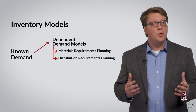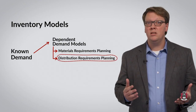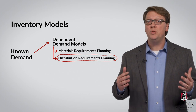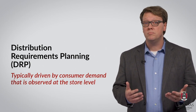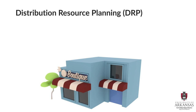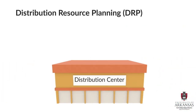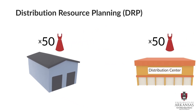While Materials Requirements Planning focuses on procurement and manufacturing processes, Distribution Requirements Planning, or DRP, focuses on inventory decisions throughout a distribution network. These decisions are typically driven by consumer demand that is observed at the store level. To understand how DRP works, let's look at a clothing store as an example. If we expect to sell 50 dresses in Store X in four weeks from now, we will need to make sure that the Distribution Center, DC1, will have sufficient inventory to cater to this demand at the store level. Accordingly, we will need to make sure that these items will be available in the manufacturer's central warehouse for shipment to the Distribution Center ahead of time.